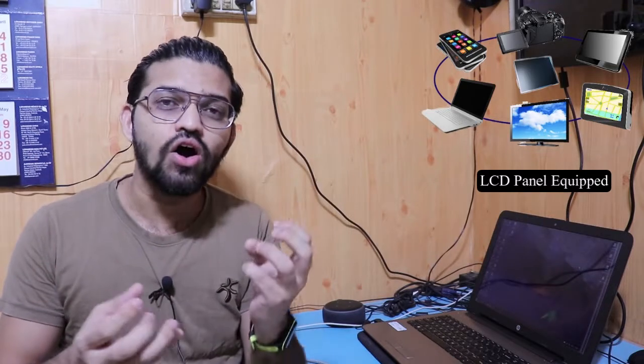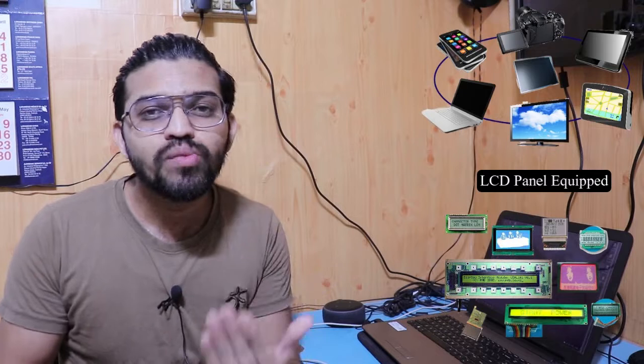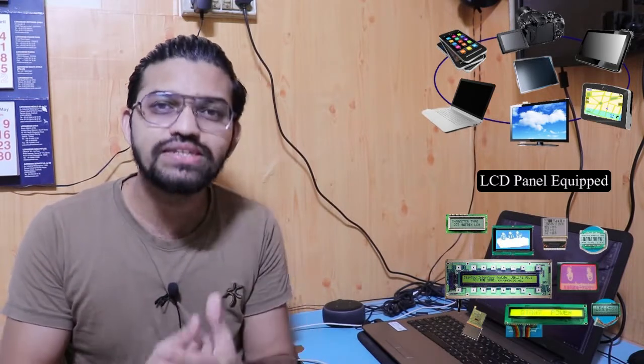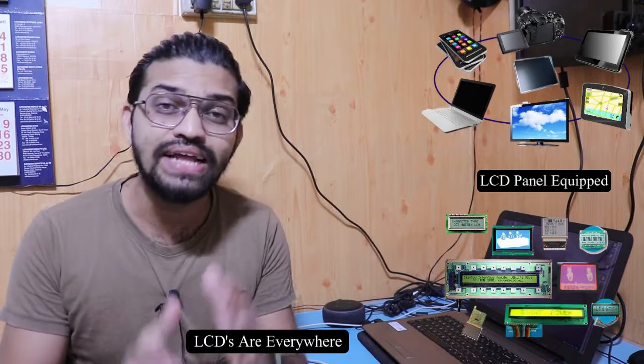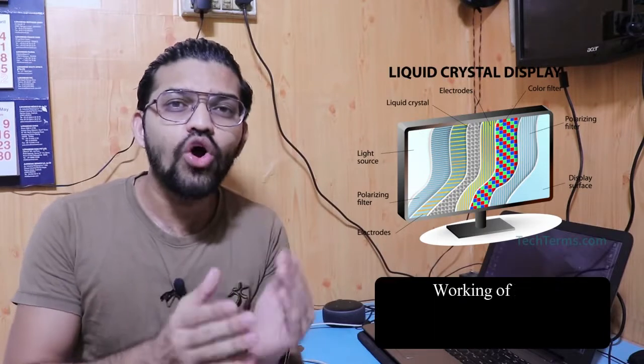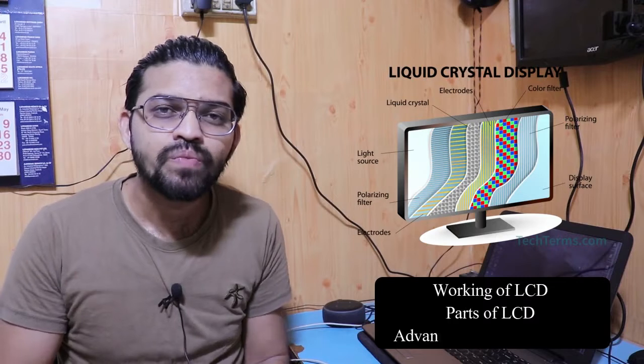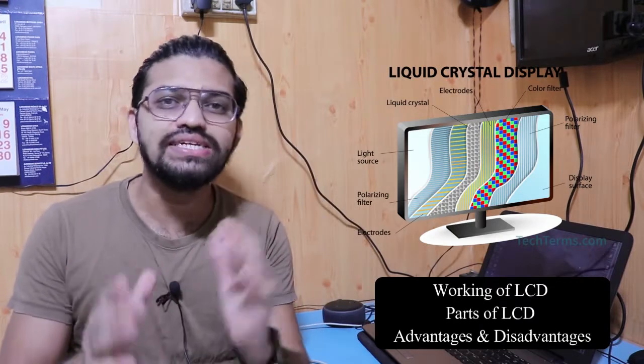Welcome back to another video from Engineers Academy. Today's topic is how does the LCD work. LCDs are everywhere around us — in televisions, laptops, smartphones, smart watches, hospital equipment, automobiles, and manufacturing industries. The use of LCD is widespread with a lot of applications in everyday life. In today's video, we'll learn how LCD panels work, the different parts inside them, and some advantages and disadvantages.